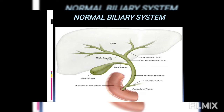This is a diagram of the normal biliary system. We have the liver, right and left hepatic ducts, gallbladder, cystic duct, common bile duct, and pancreatic duct. These then share a common opening called the ampulla of Vater, which opens into the second portion of the duodenum.